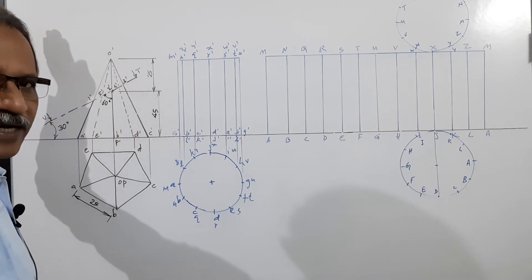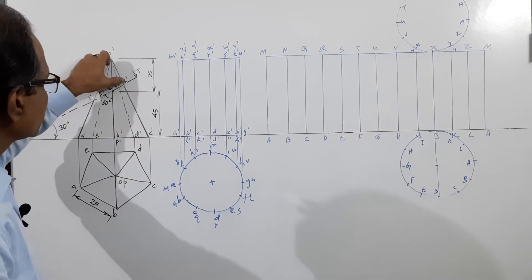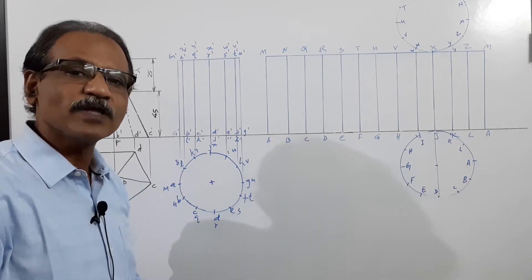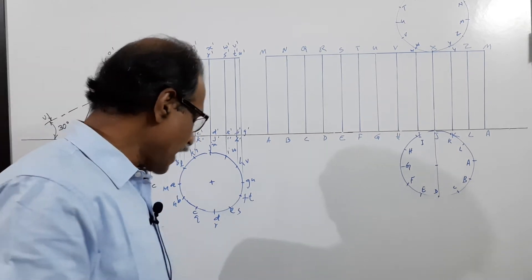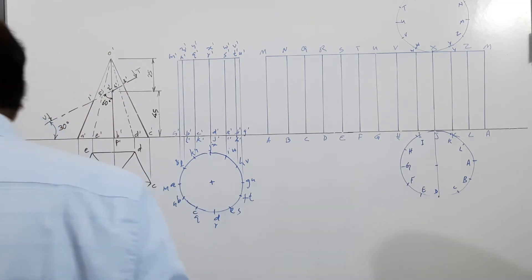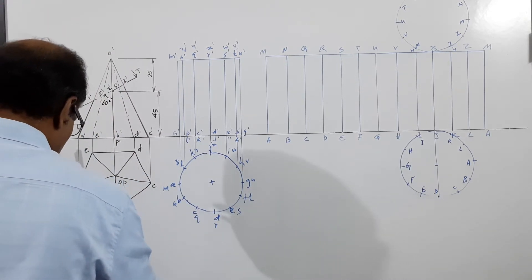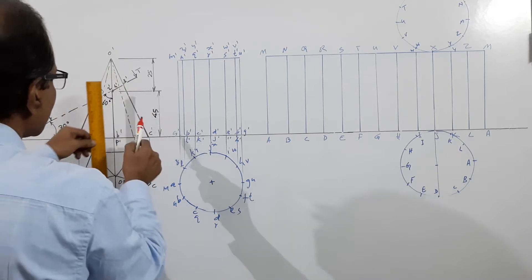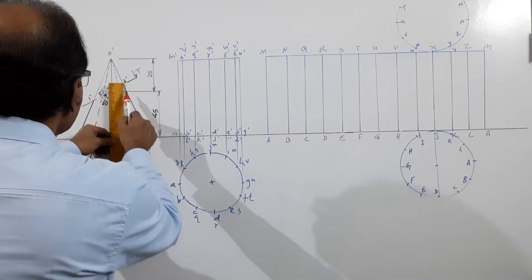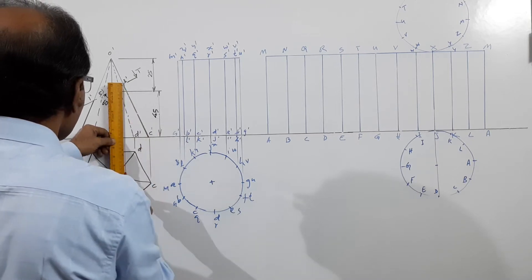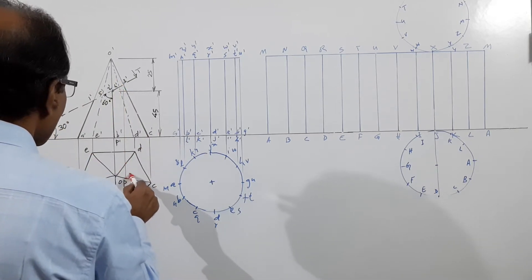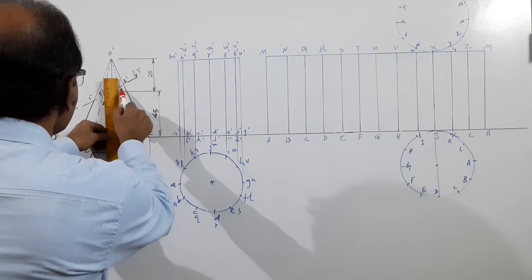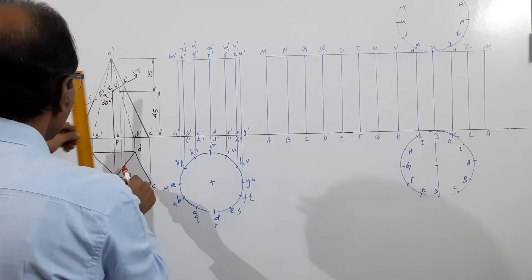The portion below the cutting plane is remaining and the top is removed. I am marking 1 dash, 2 dash, 3 dash, 4 dash, and 5 dash — where the cutting plane cuts the five slant edges of the pyramid. Now I draw the sectional plan. Project 3 dash down: 3 dash is on O dash C dash, so drop C dash down to OC — I get point 3. 4 dash is on O dash D dash, so drop 4 dash down to OD — I get point 4.